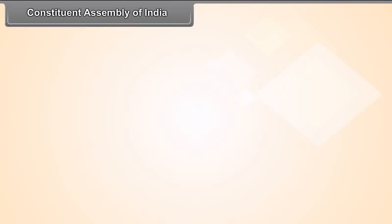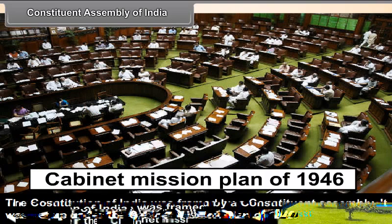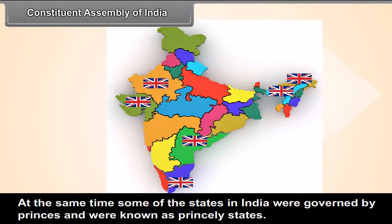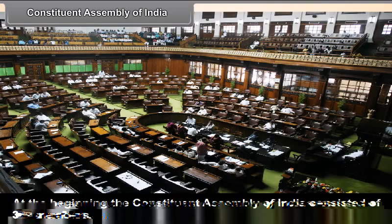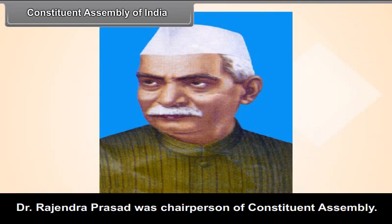The Constitution of India was framed by a Constituent Assembly. It was set up under the Cabinet Mission Plan of 1946. The British government had divided India into various provinces for the purpose of administration. At the same time, some states in India were governed by princes and were known as princely states. At the beginning, the Constituent Assembly of India consisted of 389 members. Dr. Rajendra Prasad was the chairperson of the Constituent Assembly.